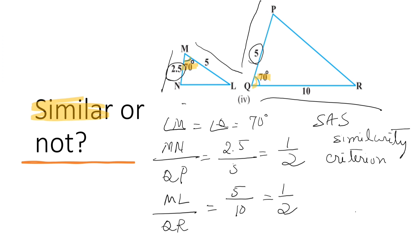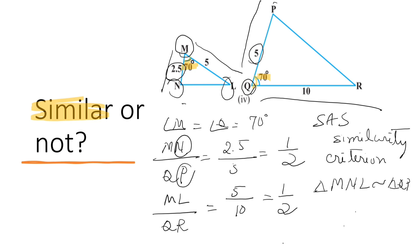Now let us write the triangles in symbolic form. Triangle MNL — for vertex M, the corresponding vertex is Q; for vertex N, the corresponding vertex is P; for vertex L, the corresponding vertex is R. So triangle MNL is similar to triangle QPR.